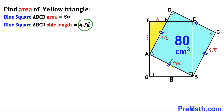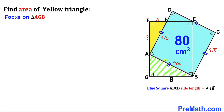So all four sides of the blue square are 4√5, as you can see across the board. Now let's focus on the right triangle AGB and apply the Pythagorean theorem to calculate the side length AG.